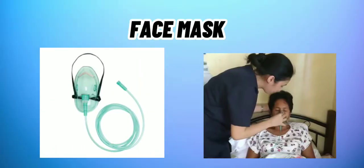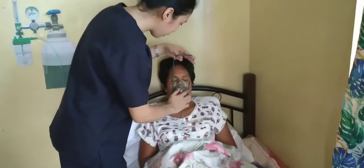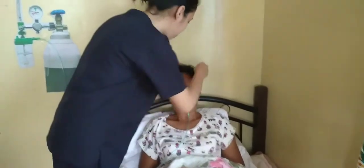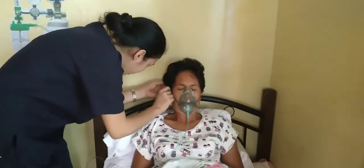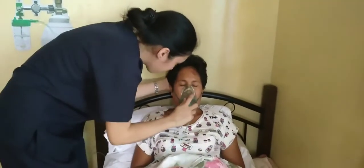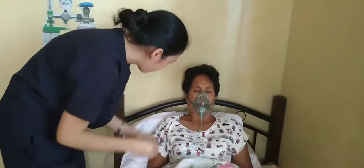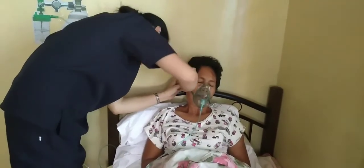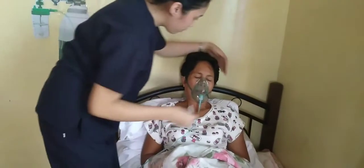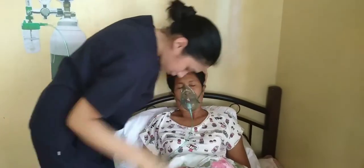Another oxygen delivery device is the face mask. Place the mask toward the client's face and apply it from the nose downward, making sure it fits the contour of the client's face. Secure the elastic band around the client's head snugly and comfortably, then pad the band behind the ears and over bony prominences to prevent skin irritation.